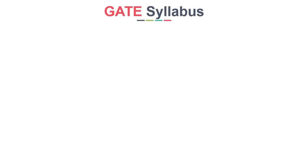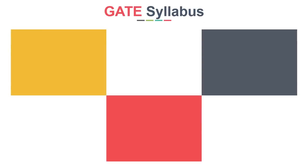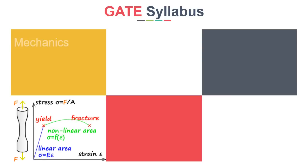Now let's see an overview of the syllabus. The syllabus of mechanical engineering is divided into three streams. The first is Design, covering mechanics, SOM, TOM, machine design, etc.